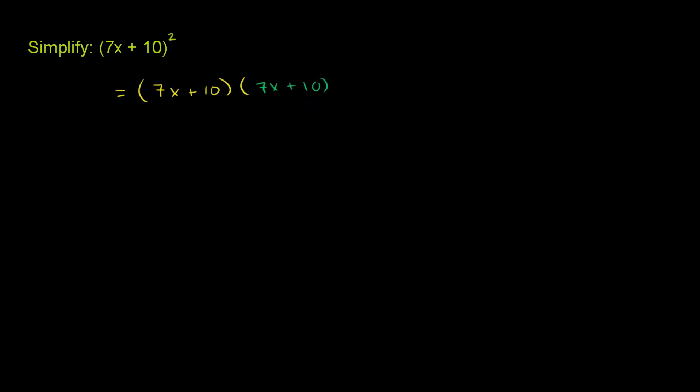We could distribute this 7x + 10 onto each of the terms. So it would be (7x + 10) times this 7x. We'll put the 7x out front: 7x(7x + 10). And then we could say plus (7x + 10) times 10, or plus 10(7x + 10). I just distributed the 7x + 10 on each of these terms.